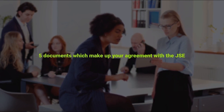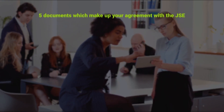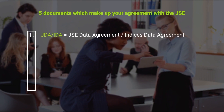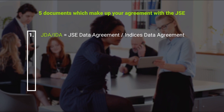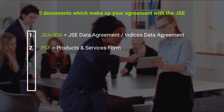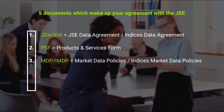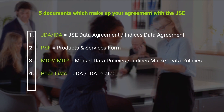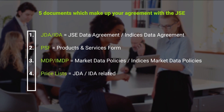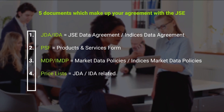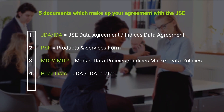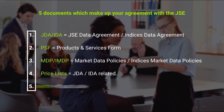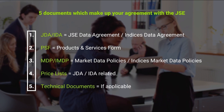There are five documents which make up your agreement with the JSE: the JSE Data Agreement or Indices Data Agreement, the Product and Services Form, the Market Data Policies or the Indices Market Data Policies, the JDA or IDA as well as related price lists, and finally, there might be technical documents if applicable.